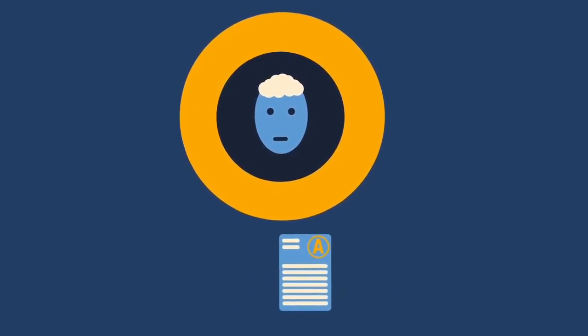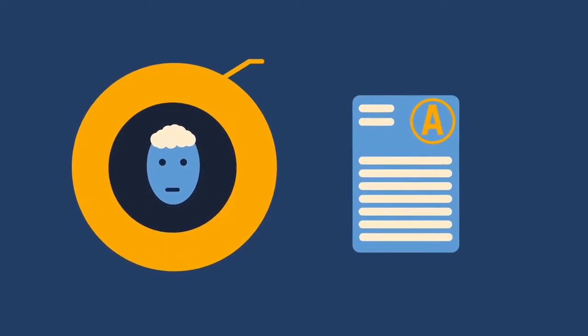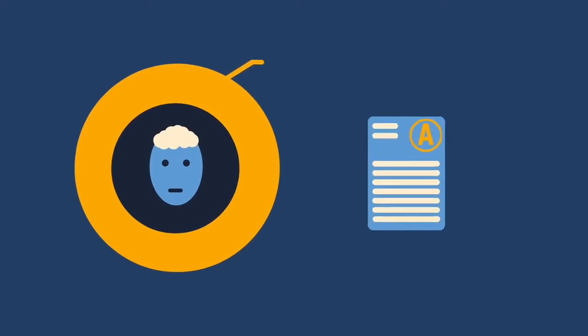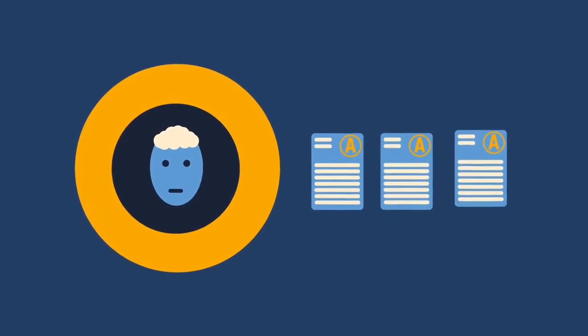For example, a student who is never challenged in school will begin to believe that they're innately smart. 'I get A's, therefore I'm smart,' they might say. The result comes so easy to them that they don't even think about the process.